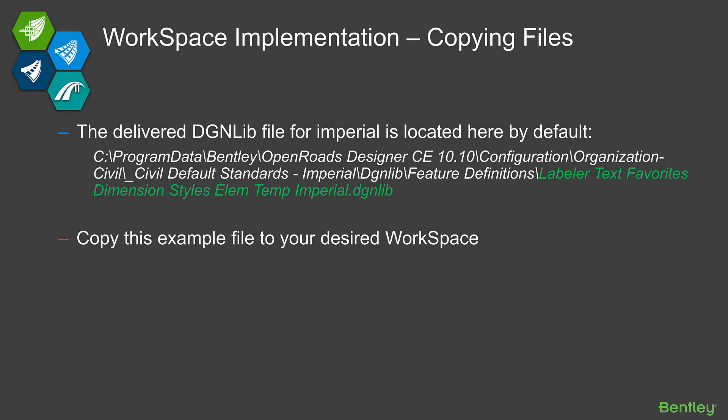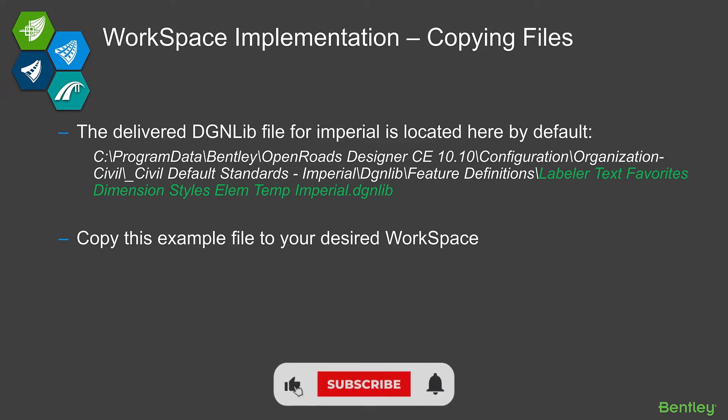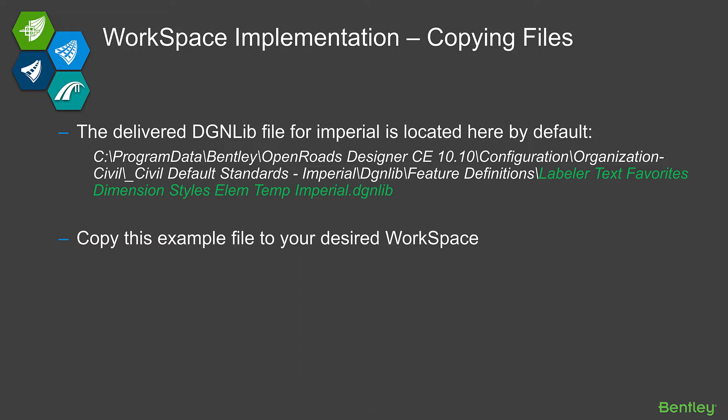The delivered DGN library file for Imperial — I've given you that location. Metric would be similar but under the metric folder structure. The file name you want to copy is the Labeler Text Favorites, Dimension Styles, Element Templates, Imperial.dgnlib. So this is the second of the two files you want to copy over: your XML file, which has all of the labeler settings, and this DGN library, which has all of your base MicroStation entities that are required. Copy this over to your workspace as well.